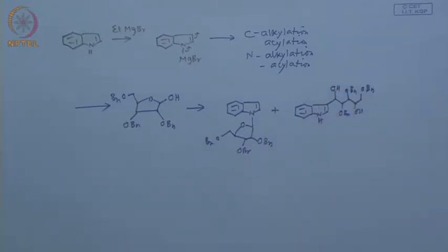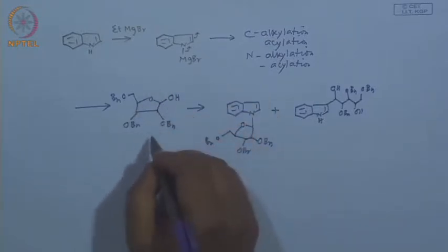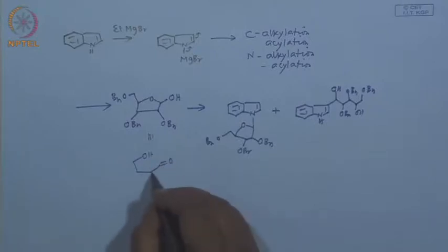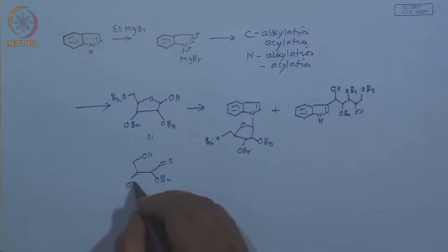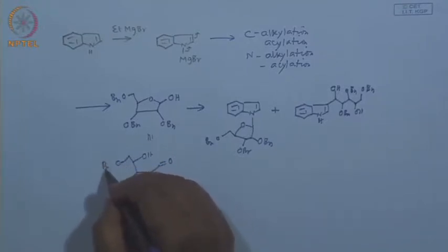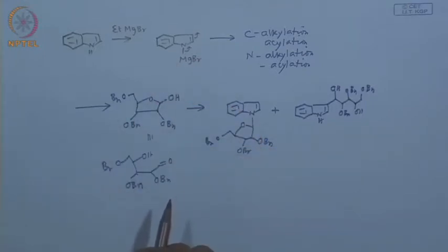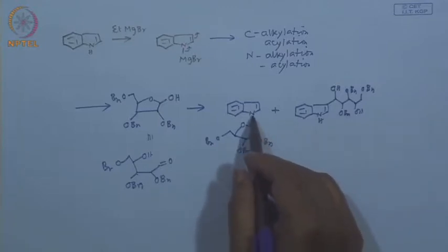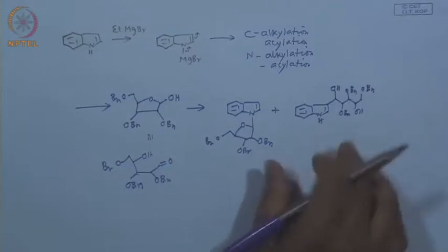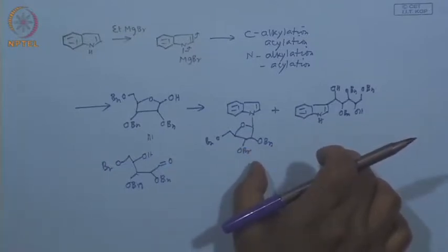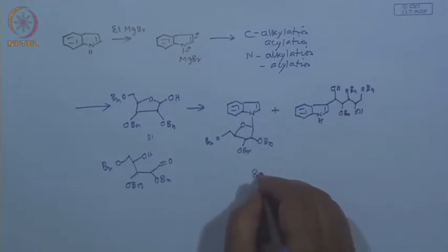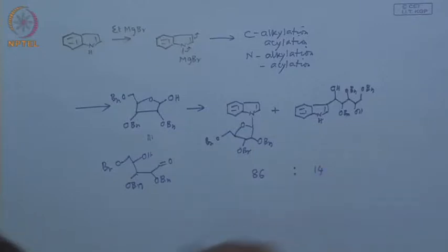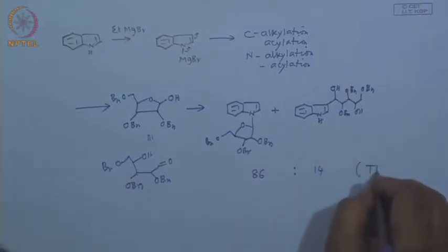We can explain this very simply: this is nothing but an aldehyde, because sugar is an aldehyde and in equilibrium they exist as aldehydes. The starting material itself has dual reactivity, and after the reaction you can get cyclic and acyclic compound. There is also the possibility of N-alkylation or C-alkylation. In this particular example, both are produced but in unequal amounts — the first one is produced in an 86:14 ratio, and the solvent used was THF.